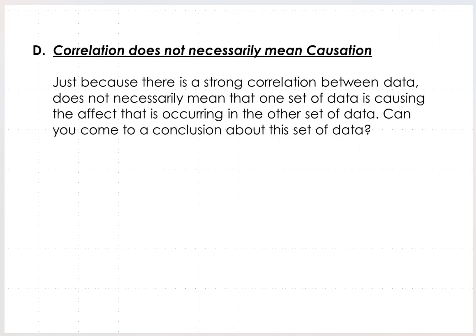And then part D, correlation doesn't necessarily mean causation. So just because there's a strong correlation between the data doesn't necessarily mean that one set of the data is causing the effect that is occurring in the other set of the data. Can you come to a conclusion about this set of data for the computer use and test scores? So I would say that there's no conclusion can be drawn since the online computer time could be related to test prep sites.